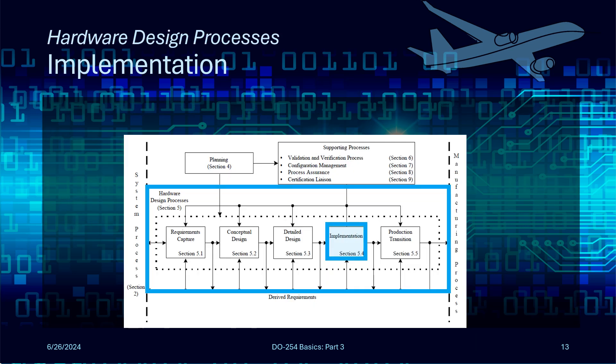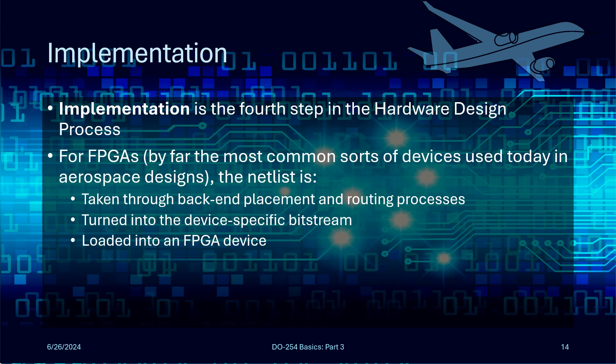After the design is developed, it goes into the implementation phase. For FPGAs, which are by far the most common type of devices used in aerospace designs, during implementation the netlist is taken through back-end placement and routing processes, turned into the device-specific bitstream, and then loaded into the FPGA device. So basically, in implementation you're moving from a higher-level design to a lower-level, technology-specific implementation of the design.